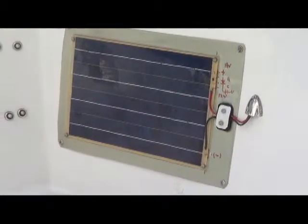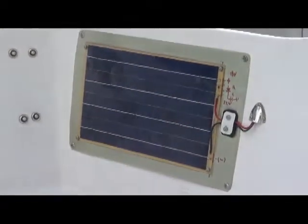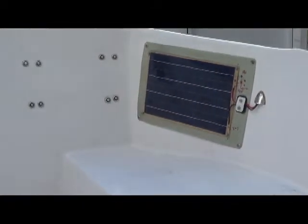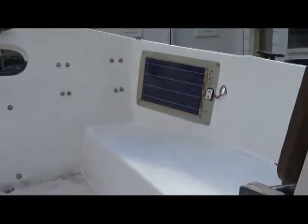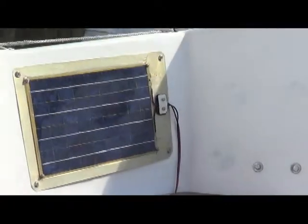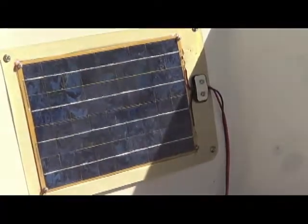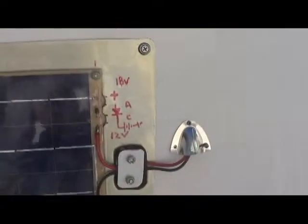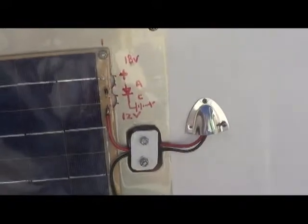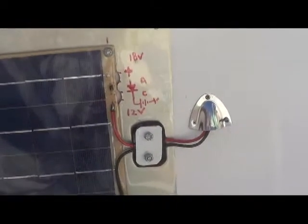The two panels I've installed here in the port and starboard side aft area of the cockpit will supply power to the auxiliary battery for the trolling motor located here in the cockpit, as well as supplying energy to the main batteries located in the v-berth down below.